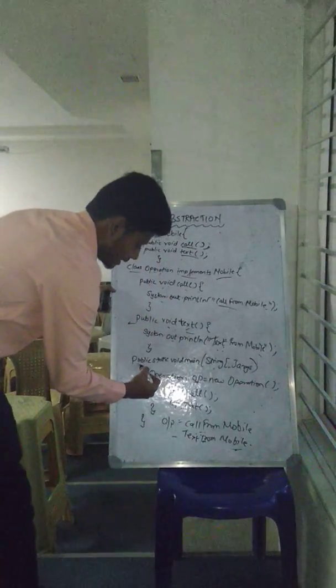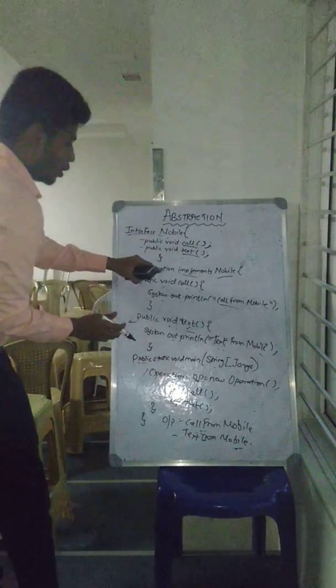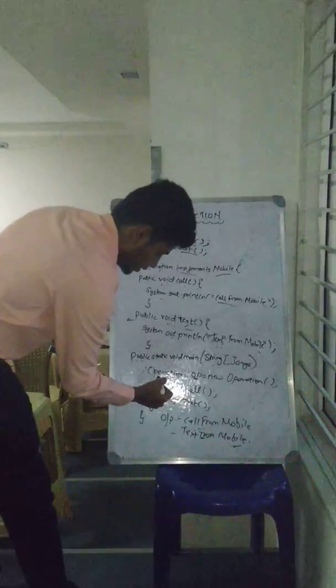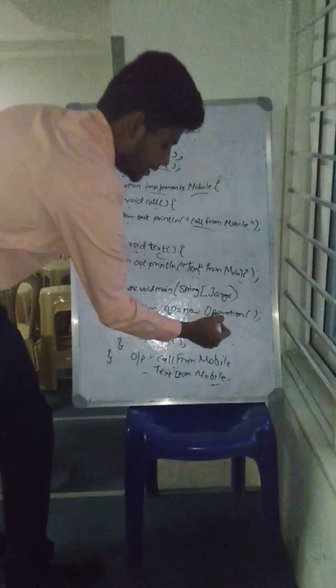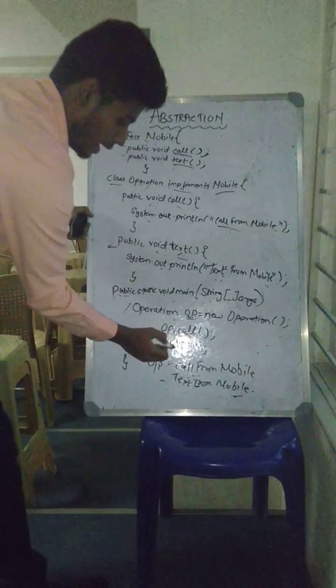So, in the main method, we are starting execution here. We create an object of operation class, and we have given name as op. We can call the method call and text method.